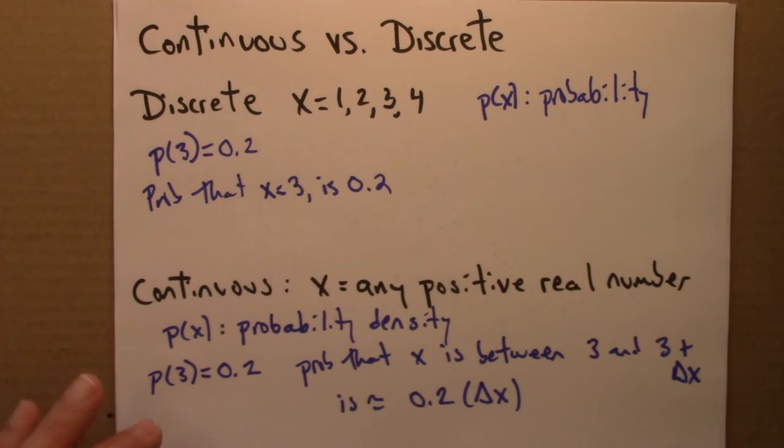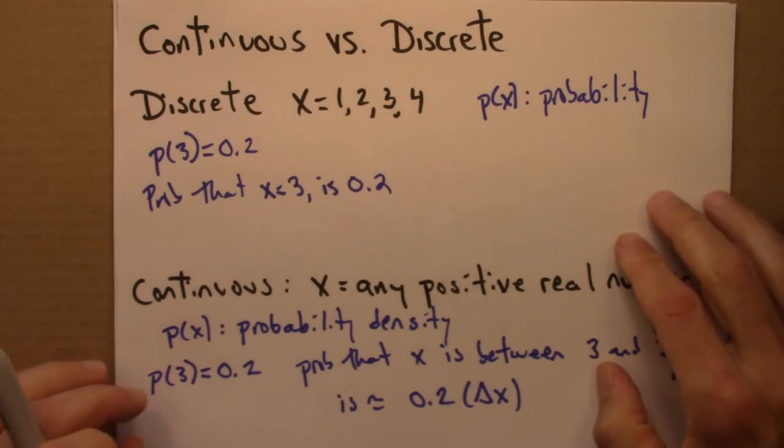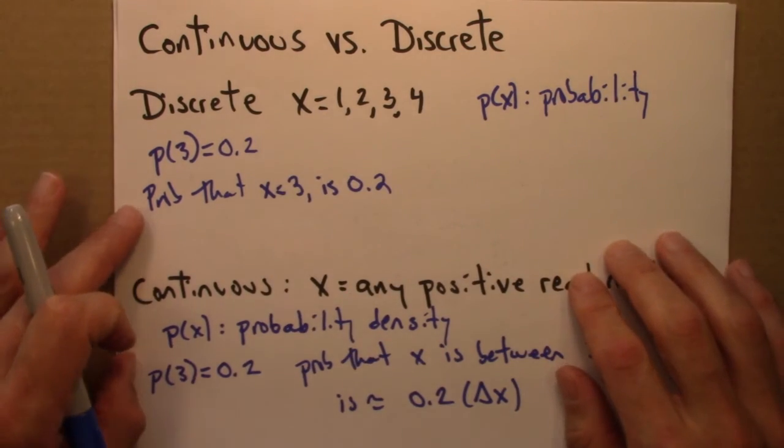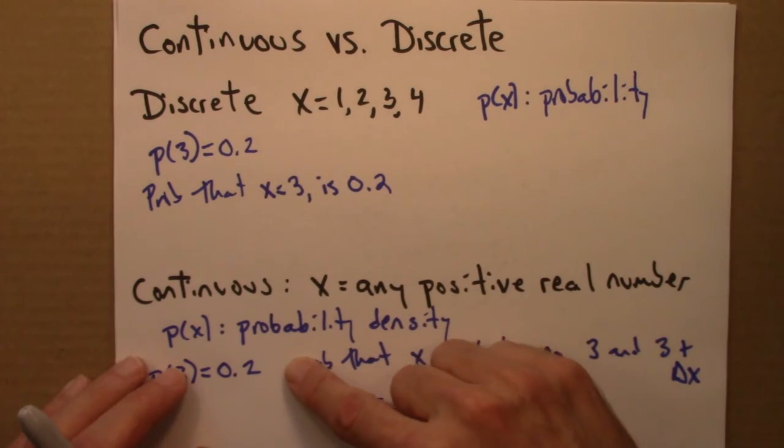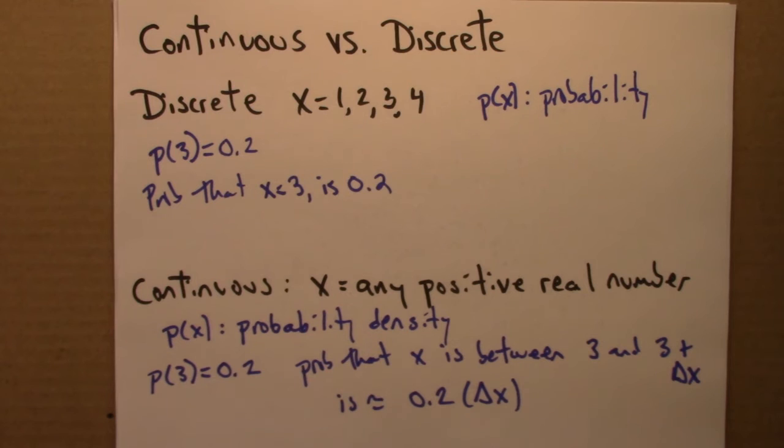The difference, however, comes when one is trying to work with these objects mathematically. And so, as this just begins to hint, discrete probability and continuous probability are different mathematical entities and so need to be handled a little bit differently.